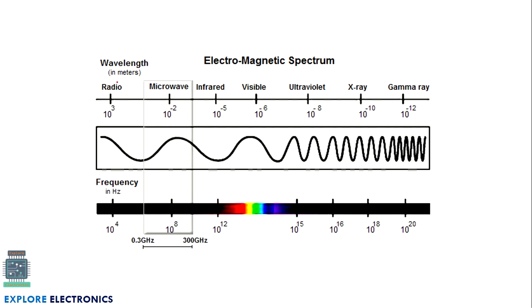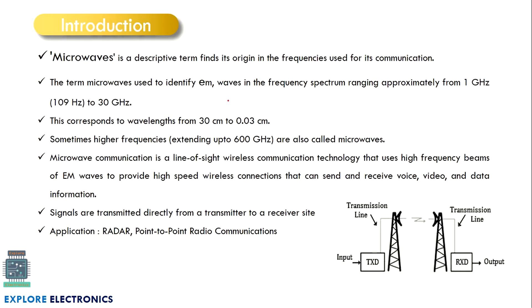After radio waves we have microwaves, then at 10 to the power 12 we get infrared, then visible light, ultraviolet rays, X-rays, and gamma rays. Microwave communication falls in the range of around 10 to the power 8 hertz, with frequencies from 0.3 gigahertz to 300 gigahertz. The corresponding wavelength ranges from 30 centimeters to 0.03 centimeters, expressed in micrometers — hence the name microwaves.